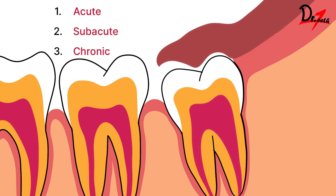The flabby gingival tissue overlapping the crown is called the operculum. There are different types of pericoronitis: acute, subacute, and chronic. Acute has a quick onset with severe localized pain around the partially erupted tooth. Subacute presents with slightly subsided symptoms, slight extra-oral swelling, stiffness of the jaw, regional lymphadenopathy, and pus discharge from the operculum. Chronic pericoronitis is recurrent — when it subsides on its own but comes back again after a few weeks or months.